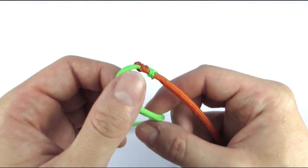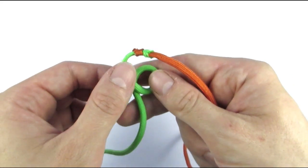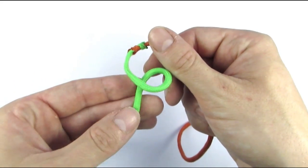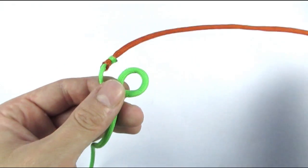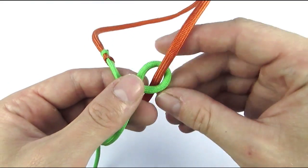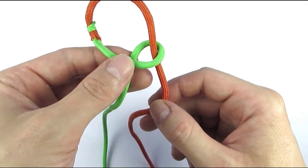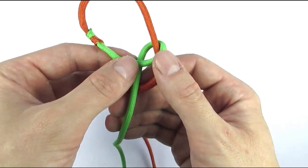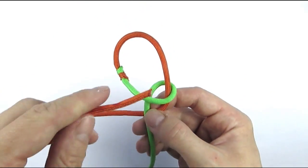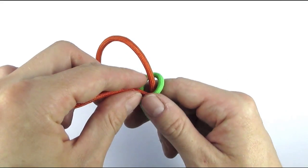We're going to start by forming a loop with one of the colors, then insert the end of the other color through. Then pass it behind the first cord, and through the top of the loop.